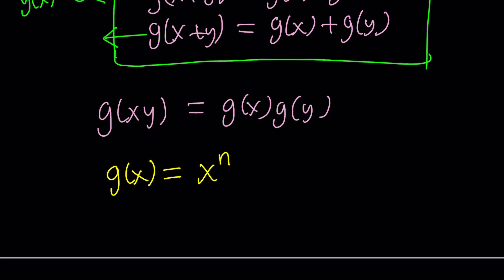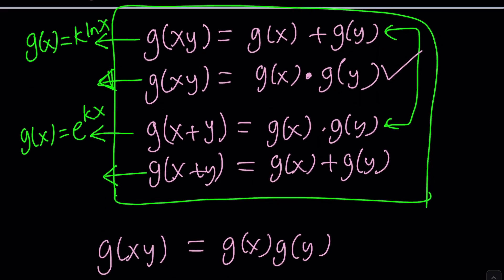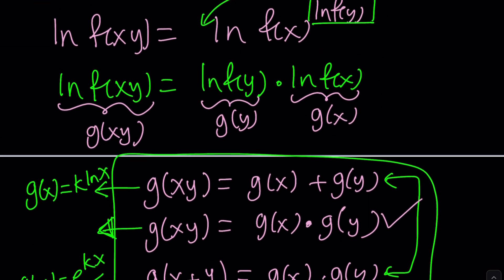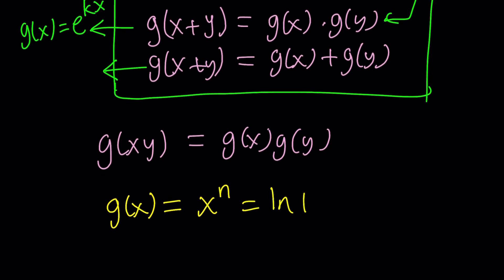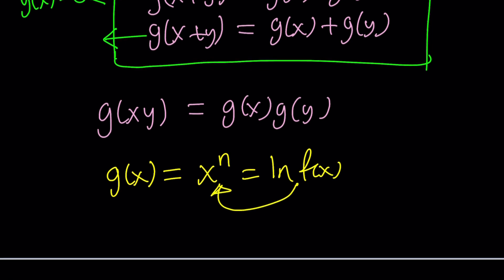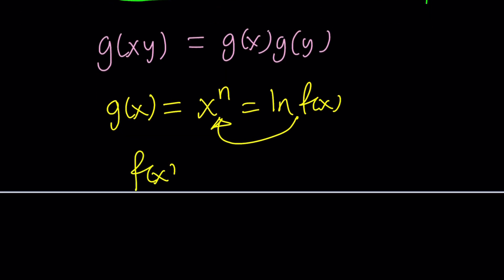But that's not the solution because we are looking for f of x. So what is g? g is ln f of x. So set it equal to ln f of x. And then this is base e. Use the definition f of x equals e to the power x to the power n. Is n an integer? Not necessarily. It could be a real number. Can it be a complex number? That's a good question.